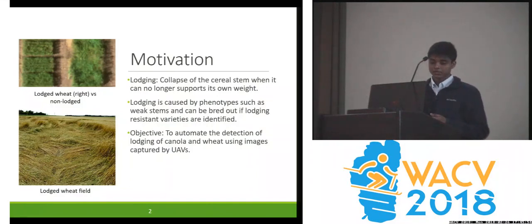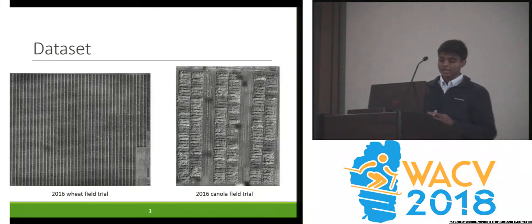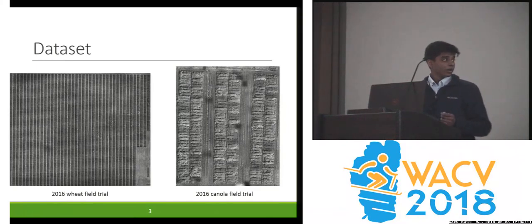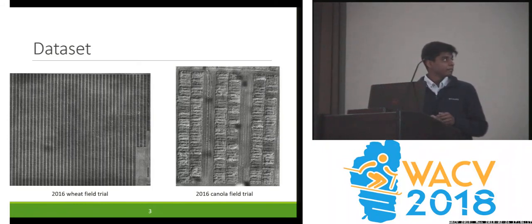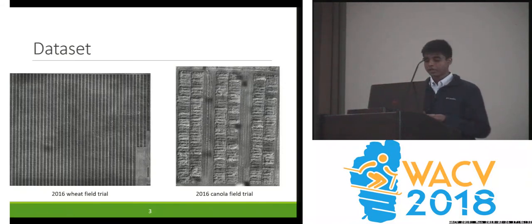Our objective of this project was to automate this process on a per-plot basis using UAV images. Our dataset consists of images captured in the 2016 growing season, and we focused on mainly two field trials done by our agricultural department. You can see the little rectangular shaped sections — that is a plot — and each of those little rectangular shapes are a different variety of wheat, and same with canola. We used a semi-automatic method to crop out each plot and used it with human observation labels.